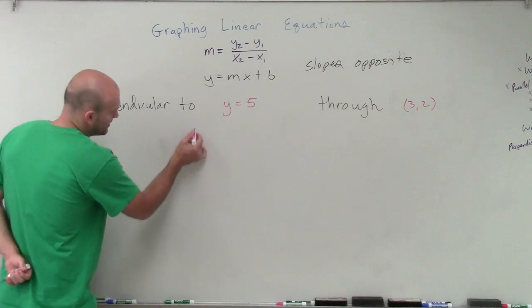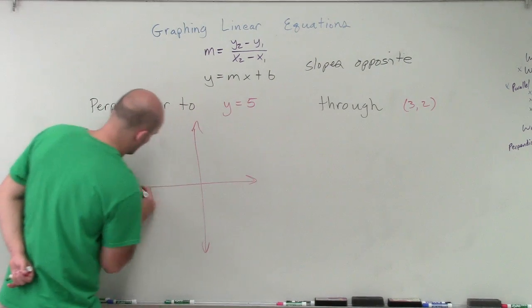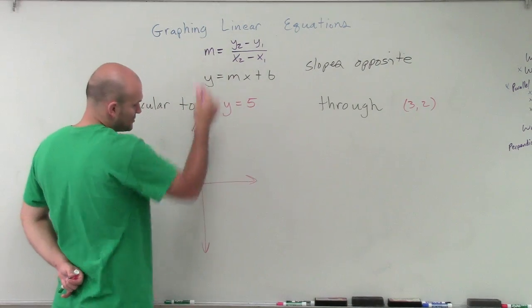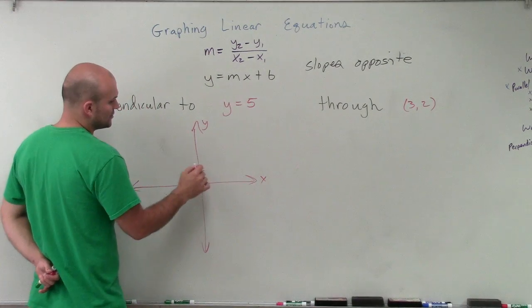So to do this, we're going to talk about a couple things. But I would like to actually graph this first, so we can kind of get an idea of what we're looking at. So y equals 5 is going to be up on the y-axis. So that's the x-axis. So 1, 2, 3, 4, 5.